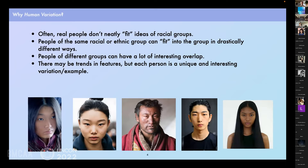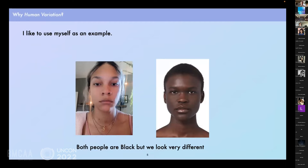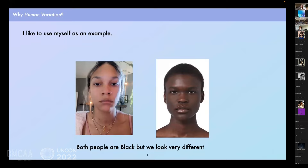Real people don't necessarily fit one's idea of these groups, and different people can fit into the same group in drastically different ways. There may be interesting trends in features, but each individual is a completely unique variation. The harder you try to make human beings fit into rigid categories, the more likely they are to disrupt them. I like to use myself as an example: I'm Black, both parents are Black, all grandparents were Black — yet throughout much of my life, many assumed I must not be fully Black. I look Black enough because I am Black. I'm just one variation that is just as legitimate as others.